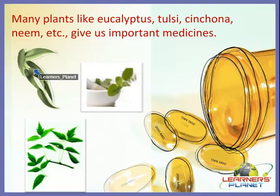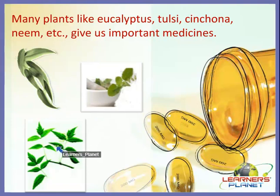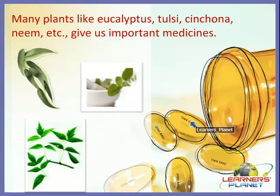Many plants like eucalyptus, tulsi, cinchona, and neem provide us with important medicines. Dyes from plants are also extremely popular — for example, henna leaves, also called mehendi, are used for decorating hands.